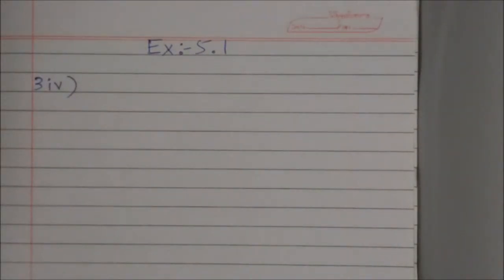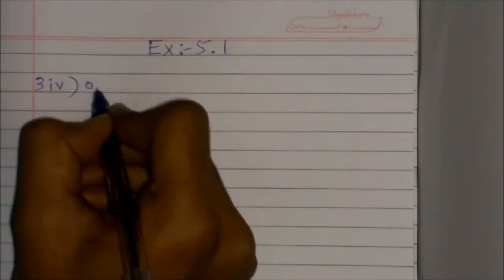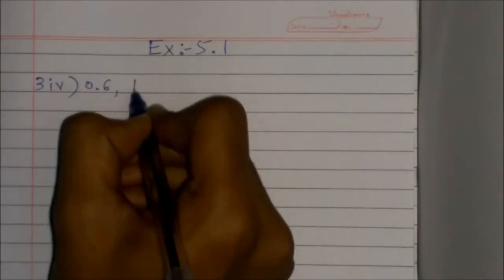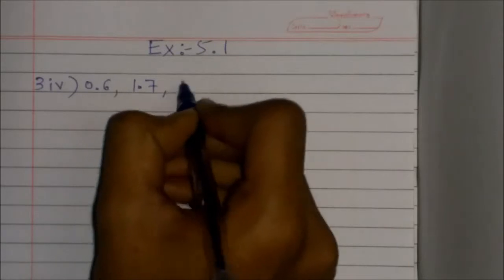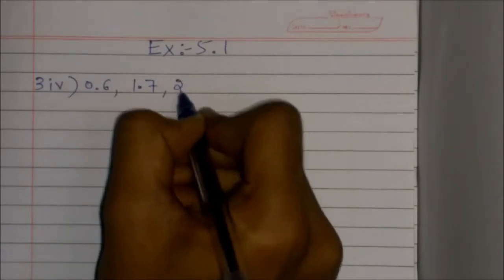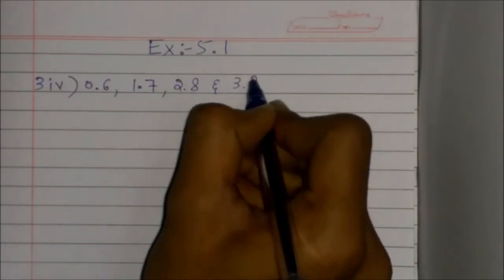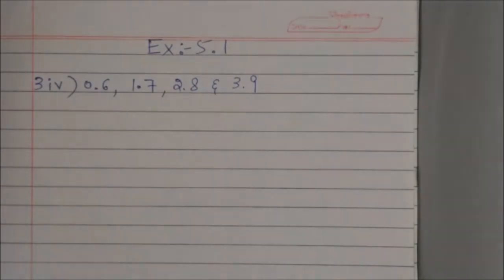Third question, fourth part. Here the series given is 0.6, 1.7, 2.8 and 3.9. Here we have to find the first term and the common difference.